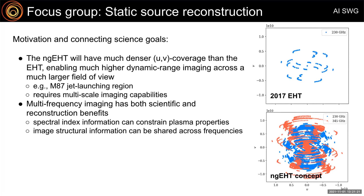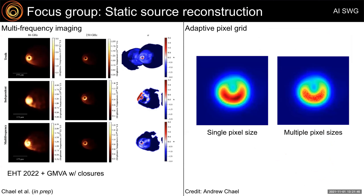Being able to reconstruct the same source across multiple frequencies would enable things like robust recovery of spectral index information, which can then be used to constrain the properties of the emitting plasma. On the left is a demonstration from Andrew Shale showing multi-frequency imaging of an M87-like simulation across both 86 and 230 gigahertz, where we can see the improved spectral index recovery that comes from using both frequencies simultaneously. On the right is a very early example of multi-scale imaging work being carried out within a regularized maximum likelihood framework, where an adaptive pixel grid is being used to substantially speed up the imaging process.